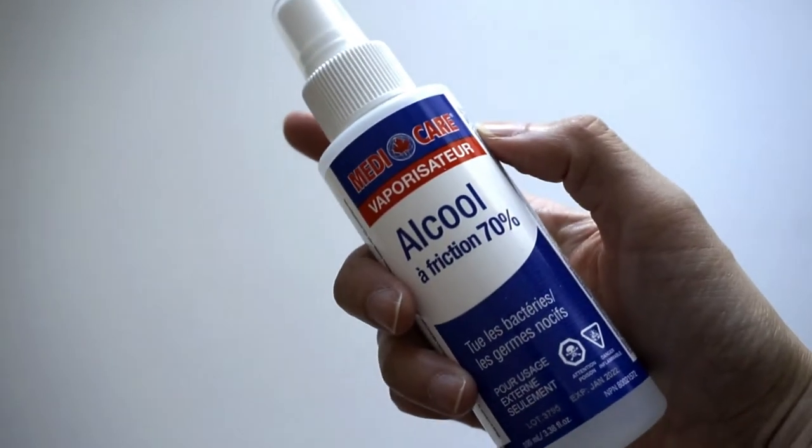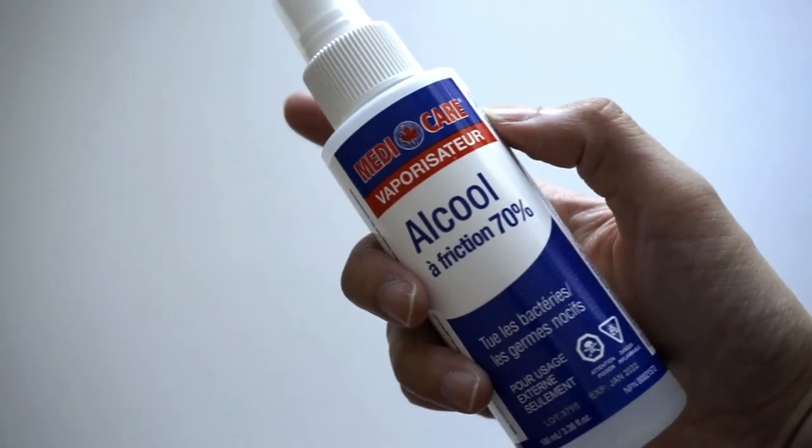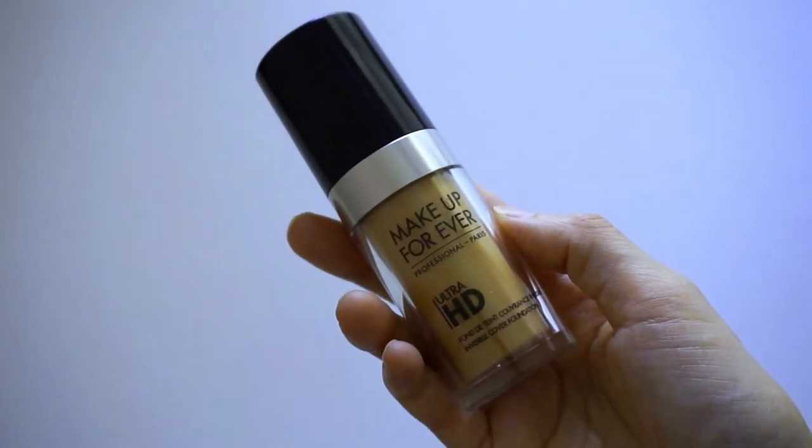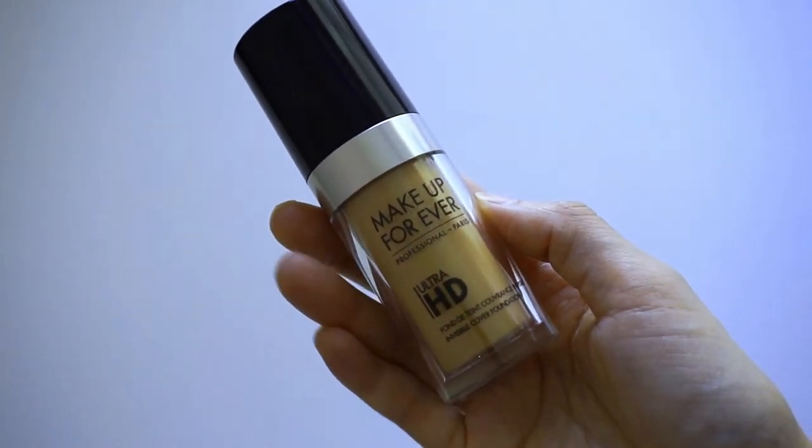This is how the compact looks like. You'll need a spatula just to mix the product itself, a tweezer so that you can take the sponge out of the compact, some kind of rubbing alcohol so that once you take the sponge out you can sanitize it, and then of course now you obviously need a foundation of some sort. I'm using the Makeup Forever Ultra HD in NY315.